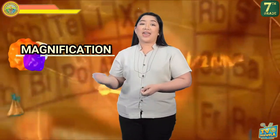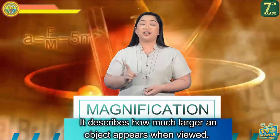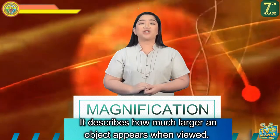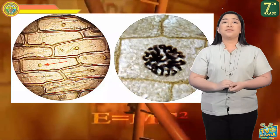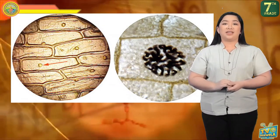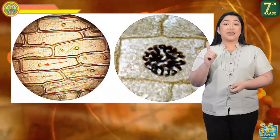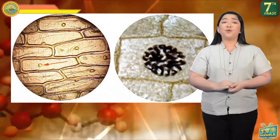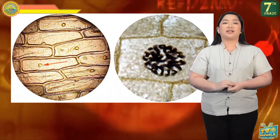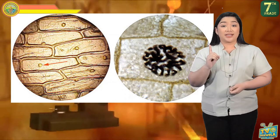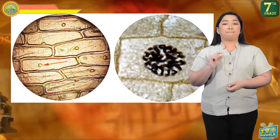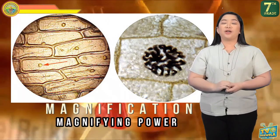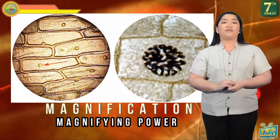To understand how a microscope works, we need to be familiar with two terms: magnification and resolution. Magnification describes how much larger an object appears when viewed. Observe the structure of an onion cell pointed by the red arrow — it is very small. If we want to see it better, we can increase its magnification, and the structure now looks bigger. That is the magnifying power of a microscope.